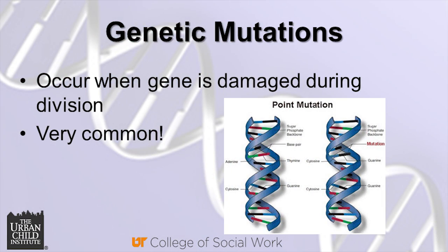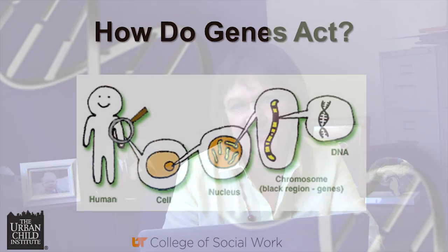Genetic mutations occur when a gene is damaged during division. Cells divide all the time in the body, and every division is an opportunity for a mistake. Chromosomes can be repeated or deleted accidentally, or a substance or experience can mutate a gene. Most of us have many genetic mutations, but most of them have no effect at all because redundancy is built into the system.